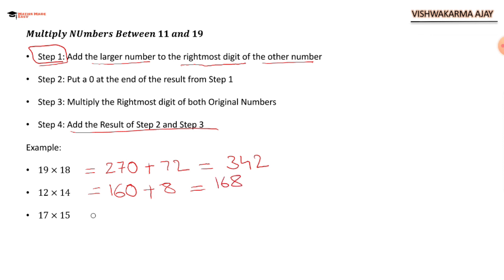17 times 15: 17 plus 5 is 22. Put 0 at the end: 220. Plus 7 times 5 is 35. So our answer is 255.